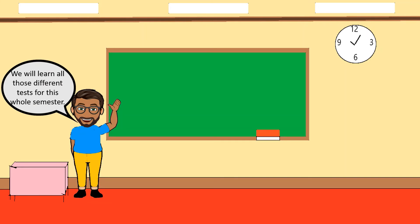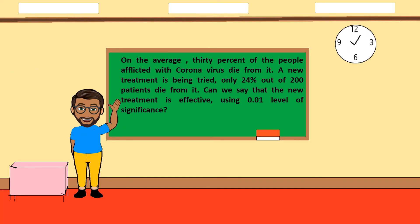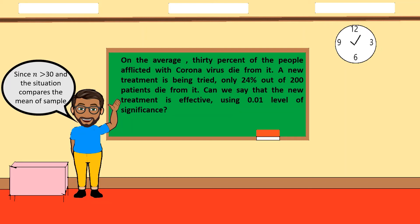We will learn all those different tests throughout this semester. For Example 1: on average, 30% of people afflicted with coronavirus die from it. A new treatment is being tried, and only 24 out of 200 patients die. Can we say the new treatment is effective at 0.01 level of significance? Since n is greater than 30 and we are comparing the sample proportion (24%) to the known proportion (30%), the appropriate test is the Z-test for one-sample case.